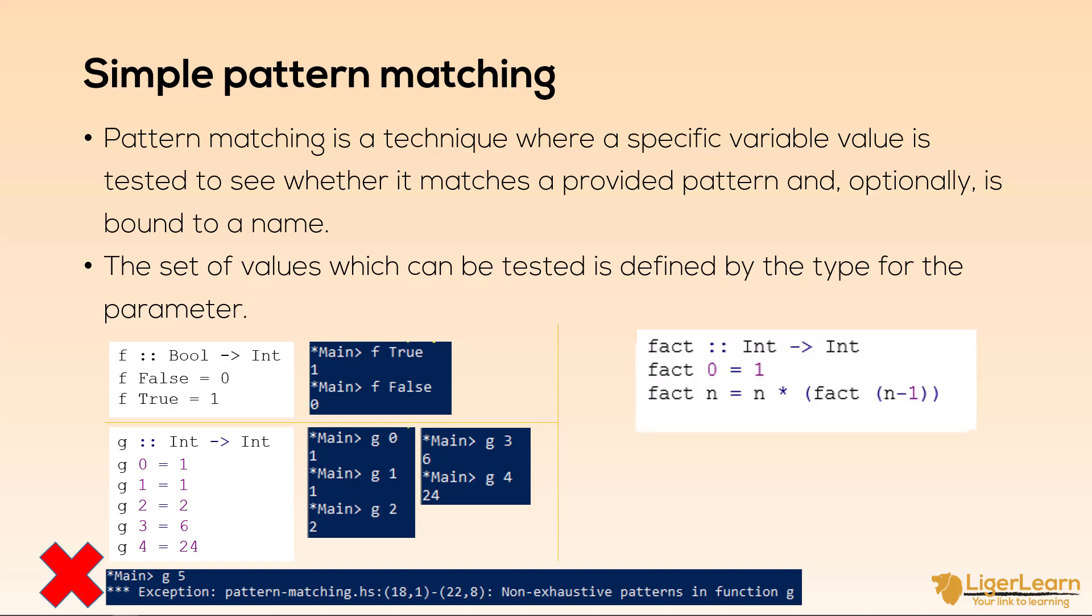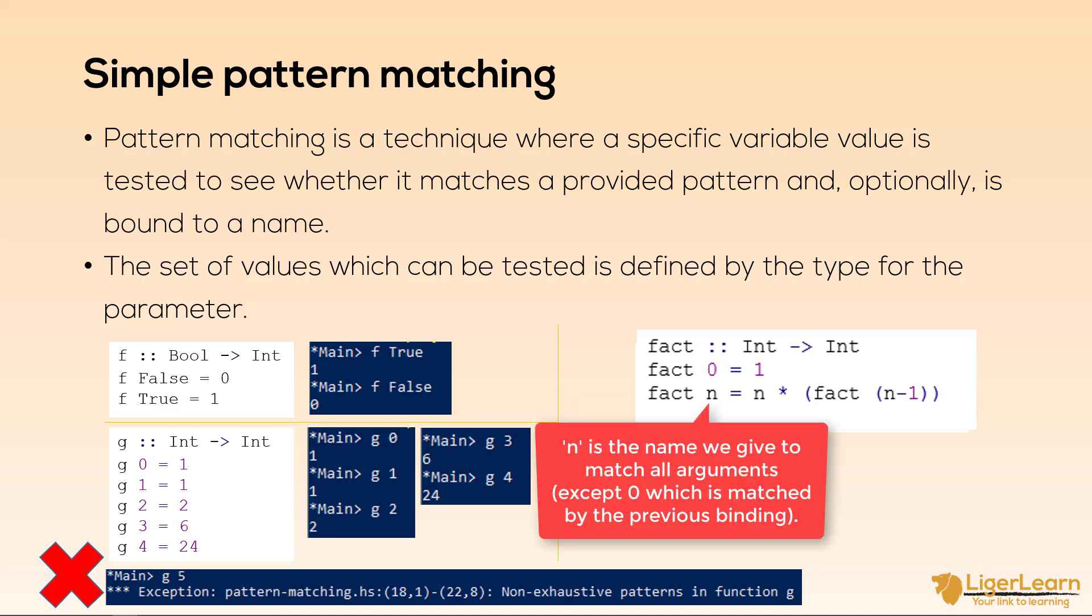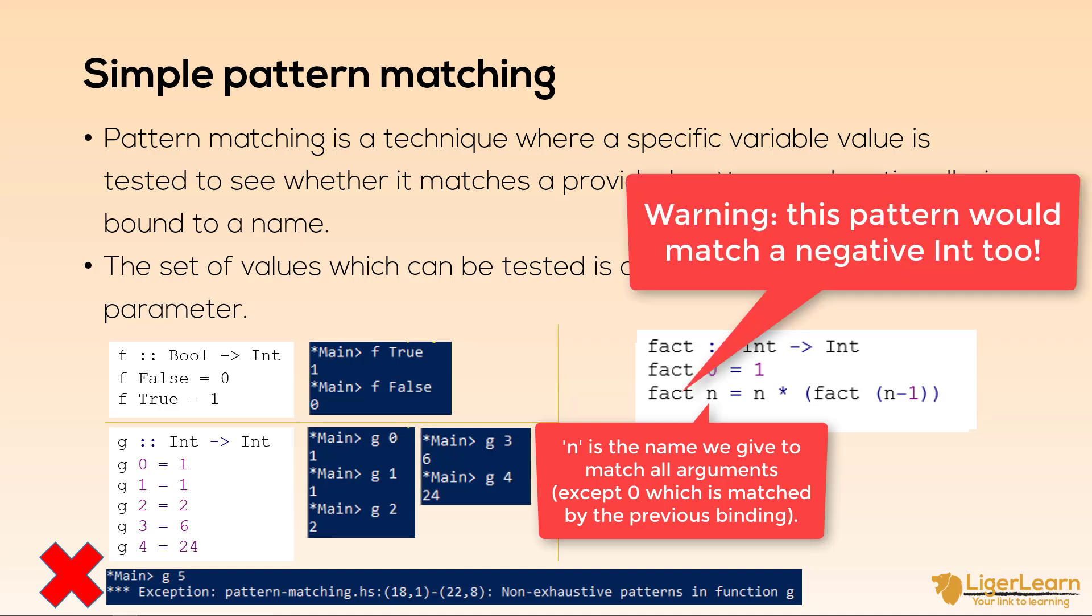Let's return to it again. In this case we have only two patterns for the parameter to the fact function. The first one is 0 which is an instance of int and will of course match when the argument passed to the function is 0. The second pattern is not actually an instance of int it is just a parameter name we have given it. This type of pattern where you provide a name for the parameter beginning with the lowercase letter actually matches against any instance of int.